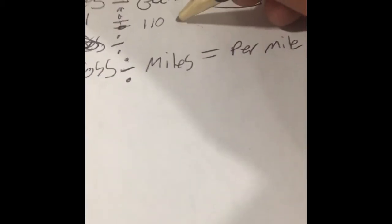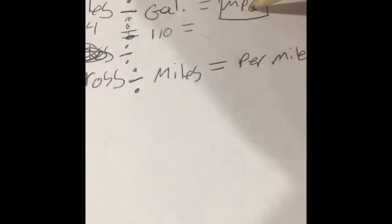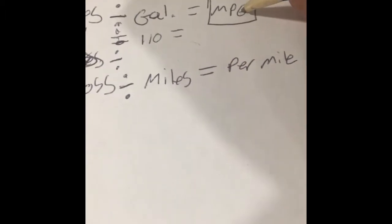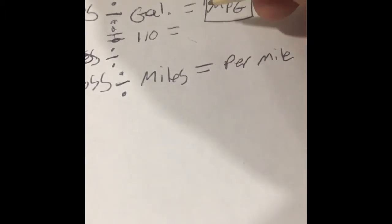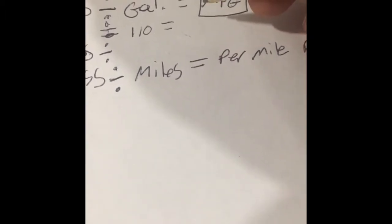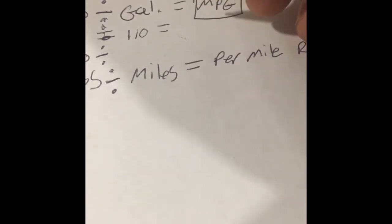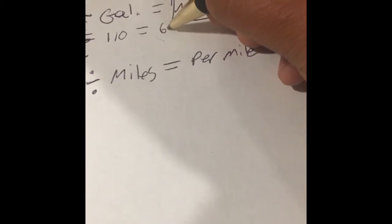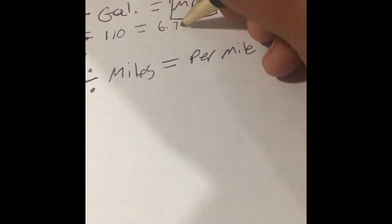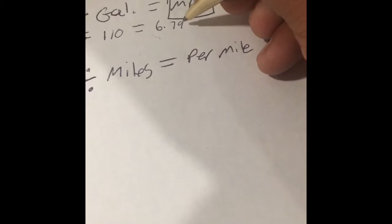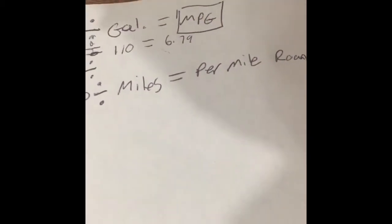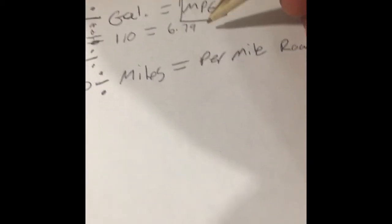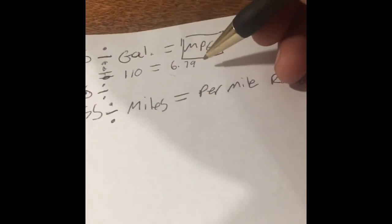And then that's going to equal my miles per gallon. I already did the math, so what does that equal? Equals 6.79 miles per gallon is what my truck is getting when I'm hauling round trip.